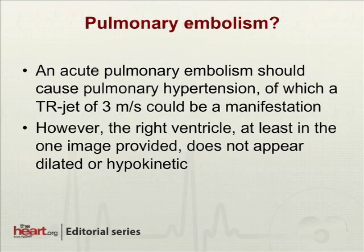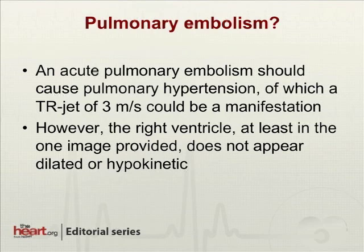Pulmonary embolism? Certainly a pulmonary embolism could cause a degree of pulmonary hypertension. If it's a first pulmonary embolism, typically the PA pressures don't go much above the mid-50s. However, the right ventricle in the apical four-chamber image does not appear to be dilated or hypokinetic in any way — it looks as vibrant as the left ventricle. So that's not quite as likely.